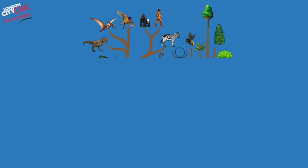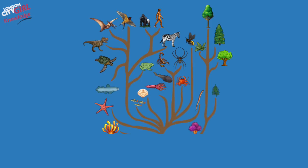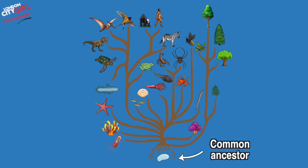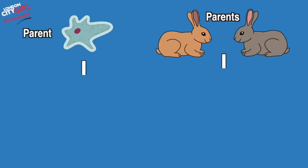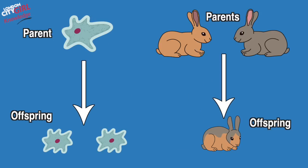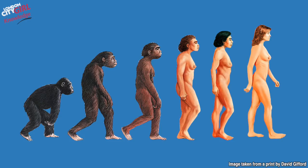Evidence from multiple fields of study points to all life on Earth having a universal common ancestor, a single-celled organism that lived roughly 3.5 billion years ago. The theory of evolution explains how the great diversity of life developed from that one organism. When living things reproduce, they create offspring that inherit a mix of their traits as well as developing traits of their own. Small changes can add up over multiple generations to create dramatic changes, and animals may even evolve into different species.